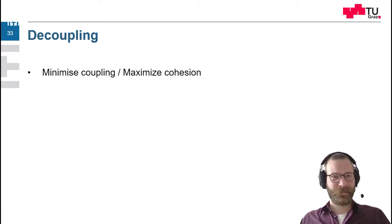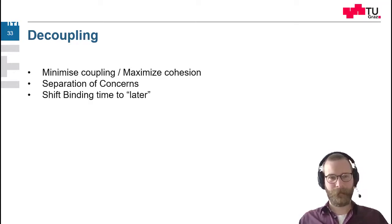Next thing is decoupling. And by decoupling we mean we should minimize coupling of objects to each other. We should maximize the cohesion. So things which belong together should be together. And things which don't relate to each other should be separated. So the separation of concerns also falls under this category. We want to shift binding time to later. Sometimes we can't decide at coding time or at development time what we should do. So we want this to be defined at runtime, for example. Dependency injection is actually something which falls under decoupling by shifting the actual used class to runtime and just configuring which class stands for which interface.